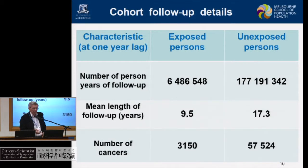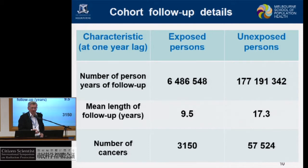In terms of person-years of follow-up: among the exposed, we had about 6.5 million person-years; in the unexposed, 177 million years. The mean follow-up for exposed was 9.5 years, and for unexposed, 17.3 years. The number of cancers in the exposed group was 3,150, and in the unexposed group, 57,524.